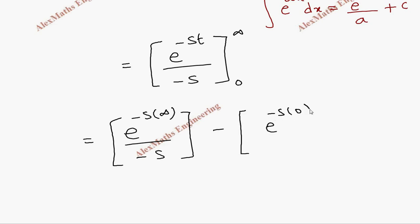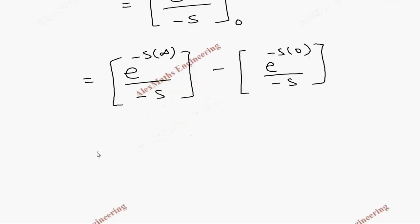Finally the first term, the numerator is e power minus s infinity, which is minus infinity only, divided by minus s. Then the second term becomes e power 0 divided by minus s.